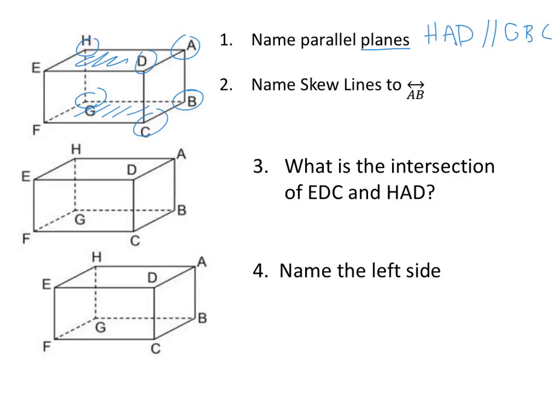Name skew lines to A-B. So here's A-B. Lines that are skewed to A-B are never intersecting and on a different plane. So I'm going to use the line F-C, make sure you use line symbols. I'm going to use the line E-D, line symbol again. H-E is skew. Or E-H is the same thing. And F-G is also skew.